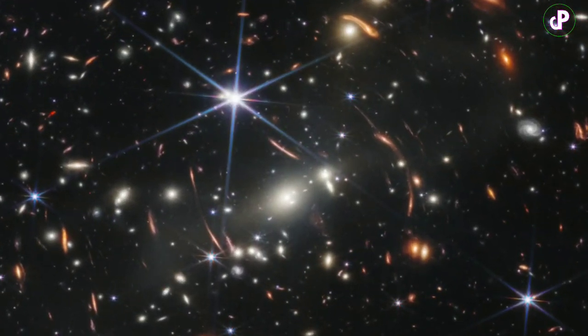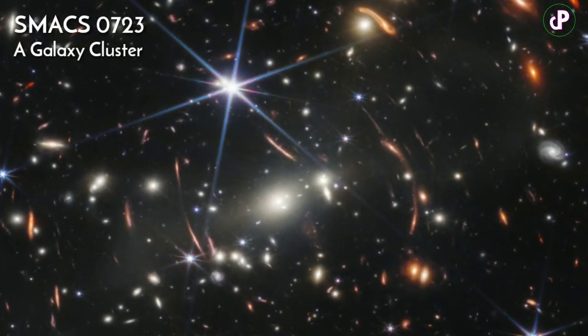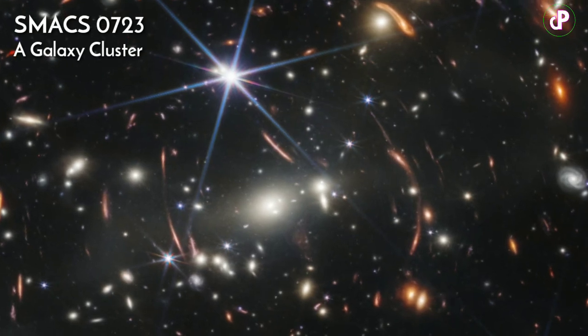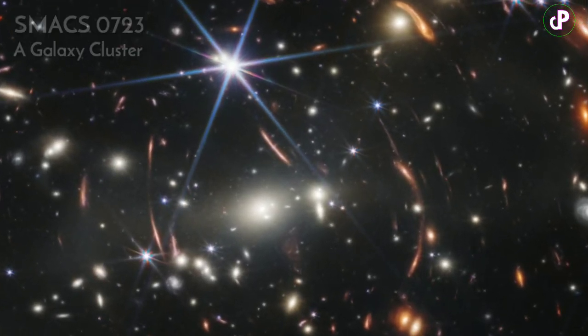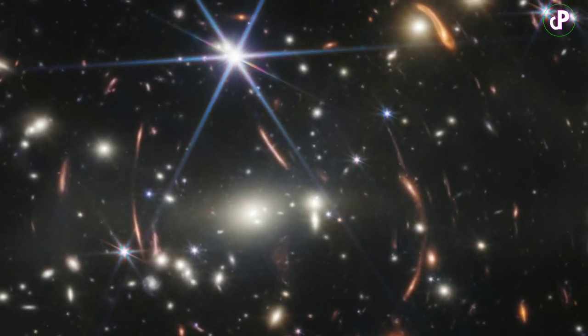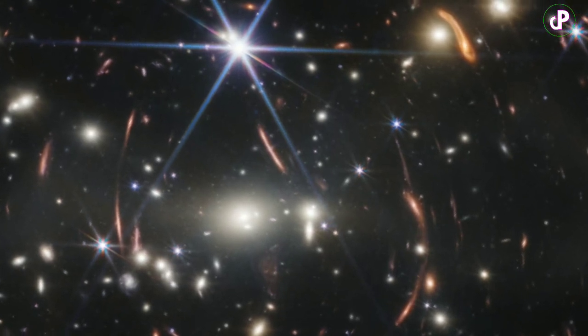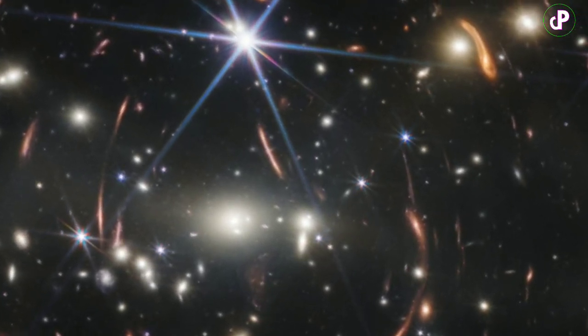The image you are looking at is the first color image taken by the James Webb Space Telescope. It is also known as the first deep field of the James Webb. This image is important for many reasons.